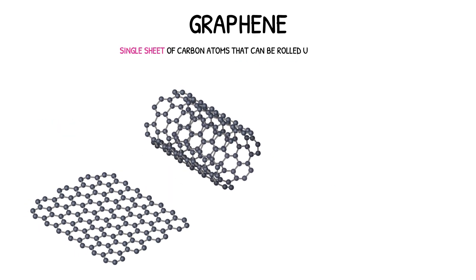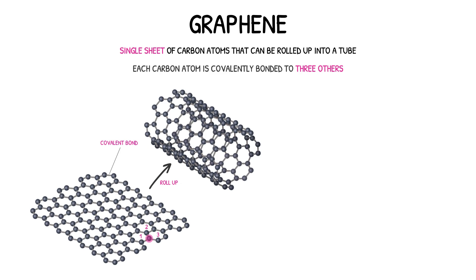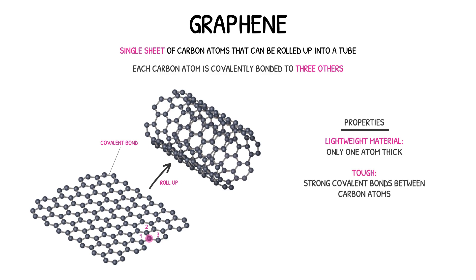Graphene is comprised of a single sheet of carbon atoms that can be rolled up into a tube. Each carbon atom is covalently bonded to three others, and the atoms are of no fixed formula, meaning the number of carbon atoms in each sheet of graphene can vary. Since it is only one atom thick, graphene is a very lightweight material, and the strong covalent bonds between the carbon atoms make graphene very tough. Graphene is also a great conductor of electricity. Carbon has a valency of four, meaning it can form a maximum of four covalent bonds at a time. Because the carbon atoms in graphene only form three covalent bonds, there are freely moving electrons not held in covalent bonds. The presence of these delocalised electrons allows an electrical charge to be carried, making graphene a great conductor of electricity.